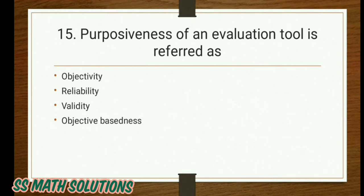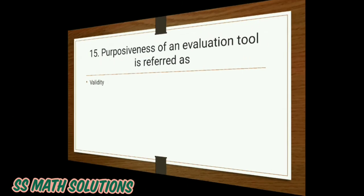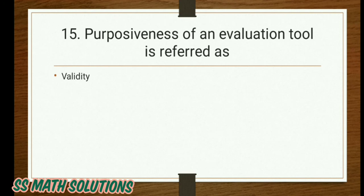Purposiveness of an evaluation tool is referred to as: objectivity, reliability, validity, or objectivity by sadness. The answer is: purposiveness of an evaluation tool is referred to as validity.